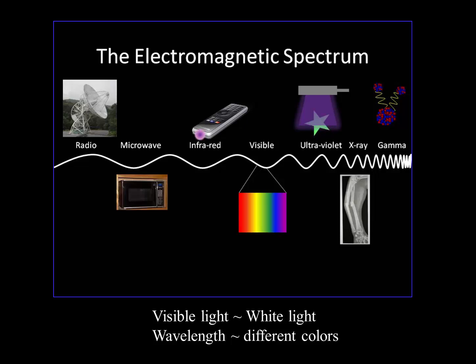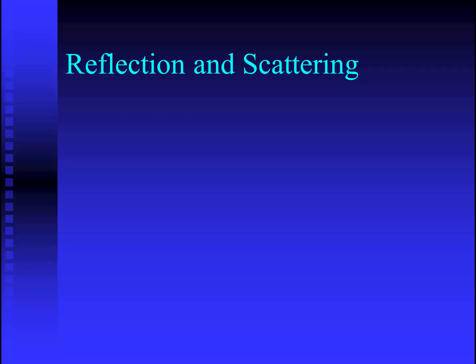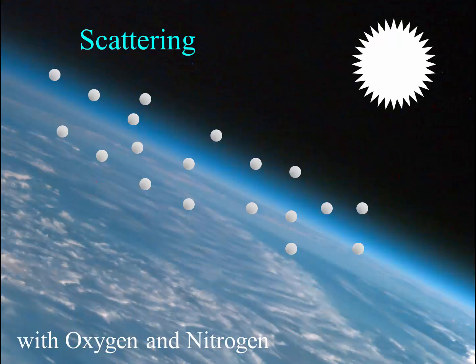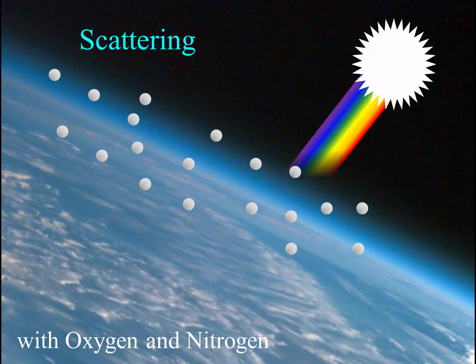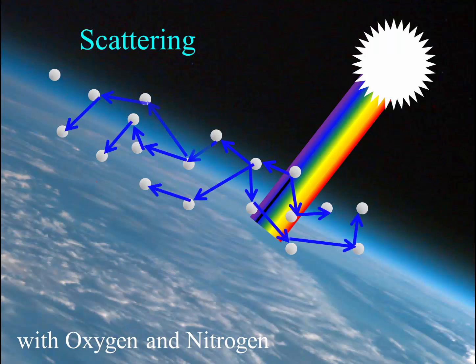Another thing that's important to understand is that different colors are simply different wavelengths of electromagnetic radiation. So, as we start talking about color, let's talk about the age-old question: why is the sky blue? The light that the Sun gives off is all the different colors. Since we have a lot of oxygen and nitrogen in our atmosphere, it turns out those atoms do a good job of scattering blue light.